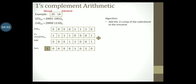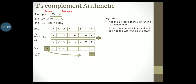This is the sum. The carry that is produced is a very special carry — that is why it is highlighted. This carry is called the end-around carry. Looking at the next step in the algorithm: if there is a carry, we need to bring it around and add it to the LSB.